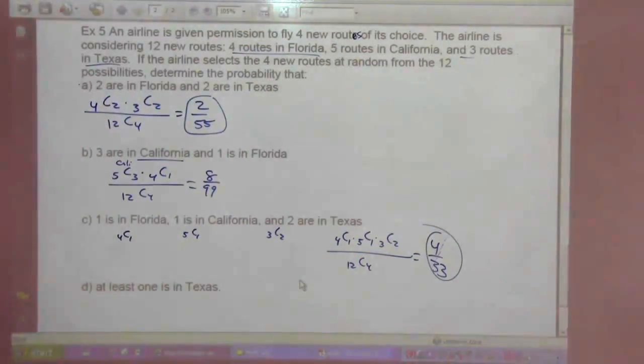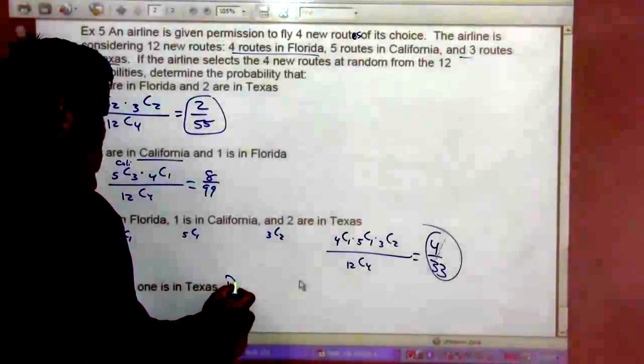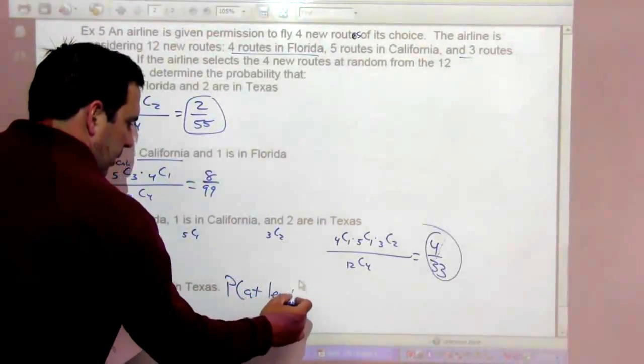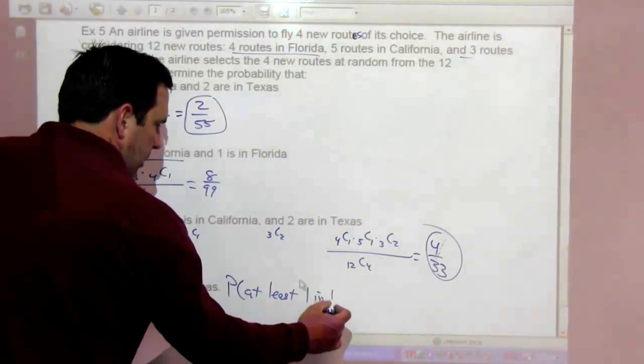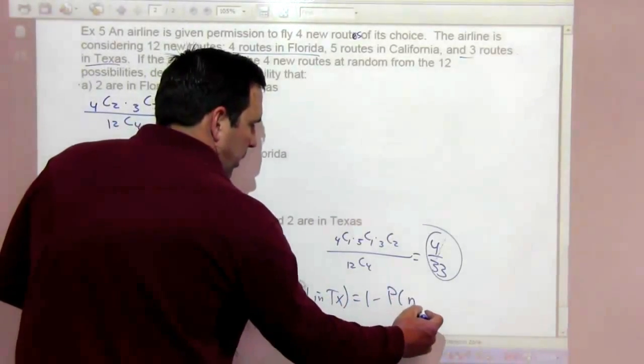And finally, part D: at least 1 is in Texas. The probability of at least 1 in Texas is 1 minus the probability that none are in Texas.